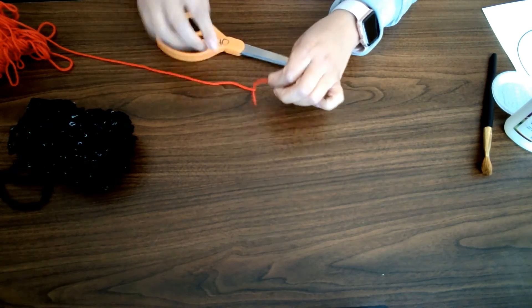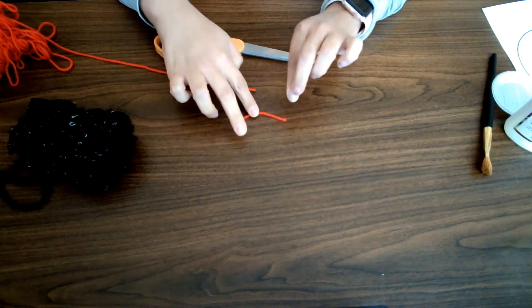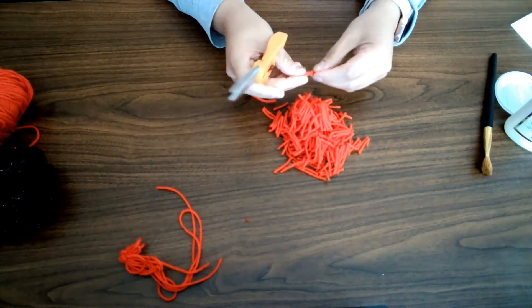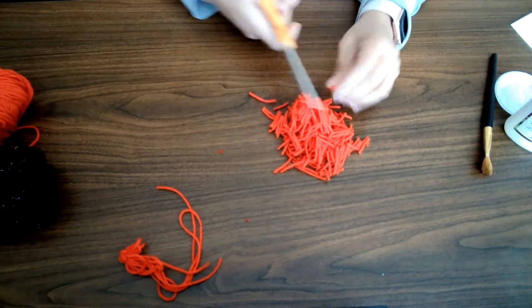Now that I have all my supplies ready, I'm choosing to use the red yarn for the inside of my heart. So I'm going to cut carefully the red yarn into little pieces.